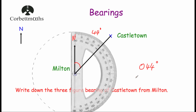So if the answer is less than a hundred, make sure you give it as a three-figure bearing by putting a zero in the front. The bearing of Castletown from Milton is 044 degrees.